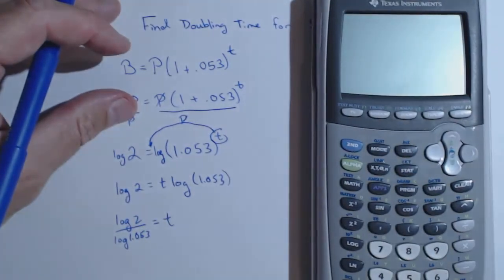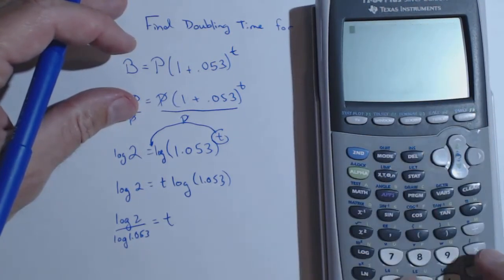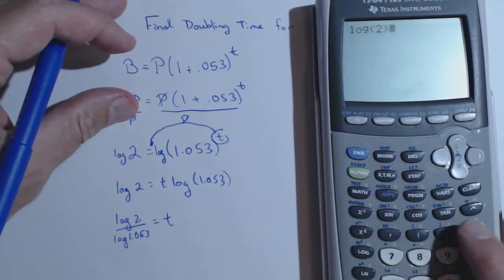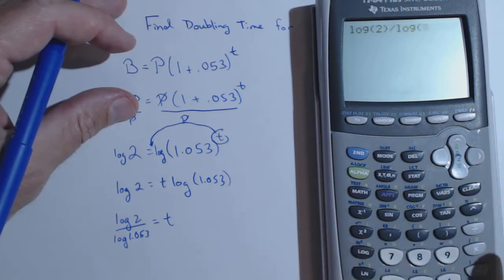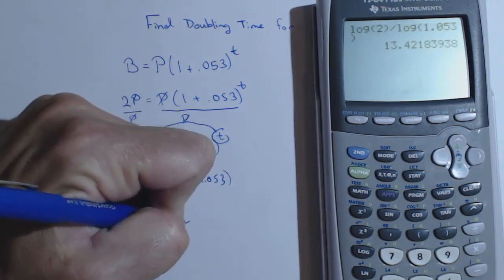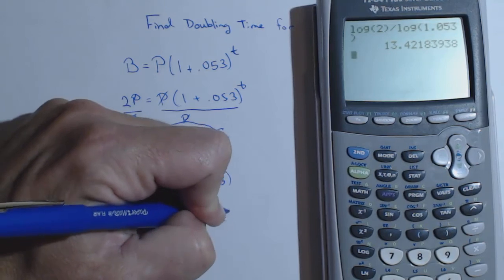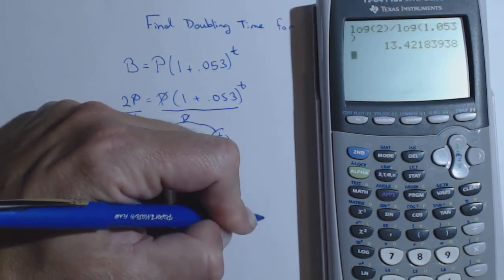So we can put that into our calculator, and we have log of 2 divided by log of 1.053, and we see that the doubling time for 5.3% compounded annually is about 13.42 years.